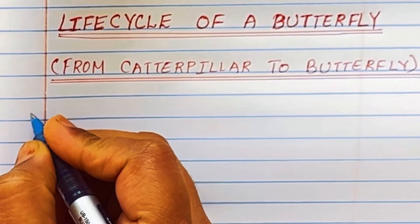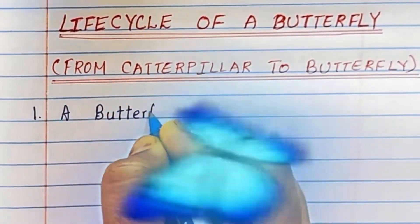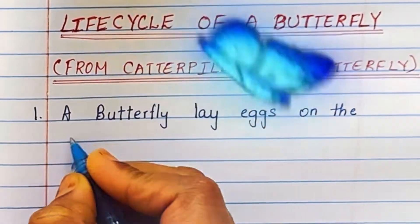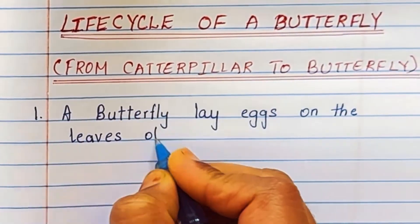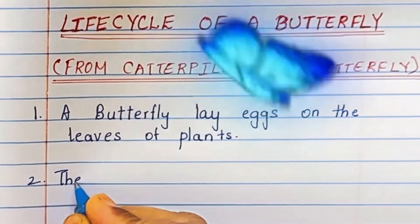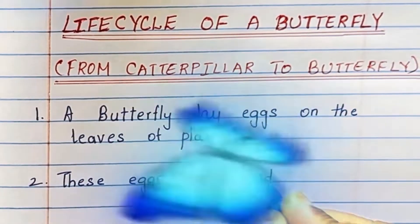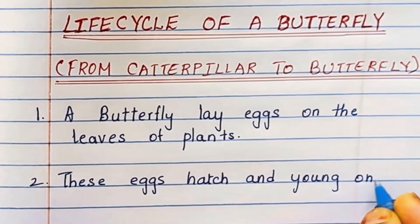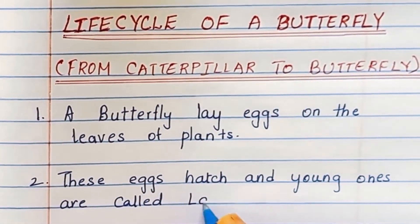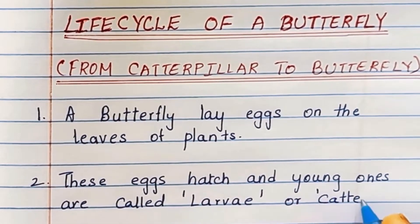Assalamu alaikum, welcome to SF Education. Today's topic is life cycle of a butterfly, from caterpillar to butterfly. First point: a butterfly lays eggs on the leaves of plants. Second point: these eggs hatch and young ones are called larvae or caterpillar.